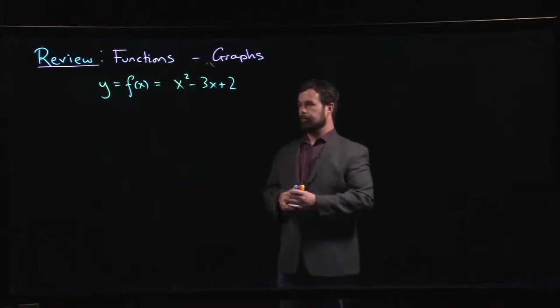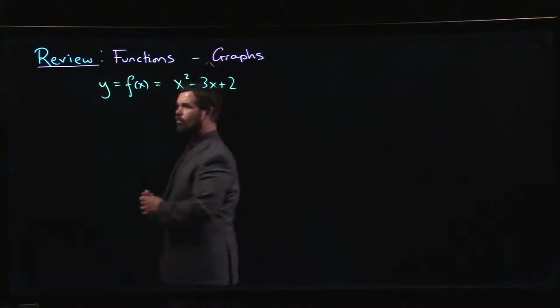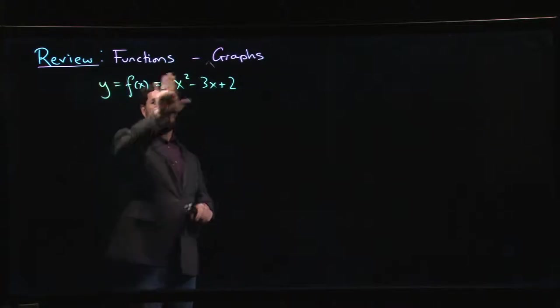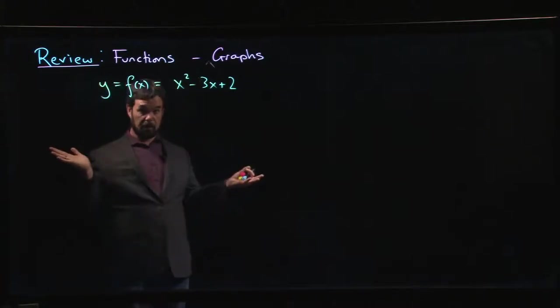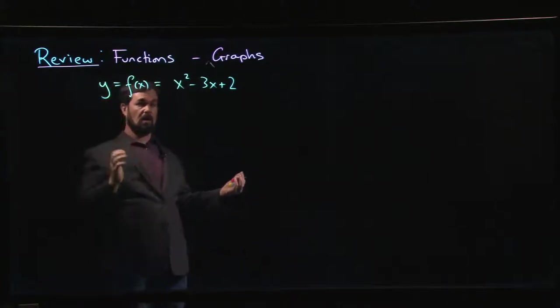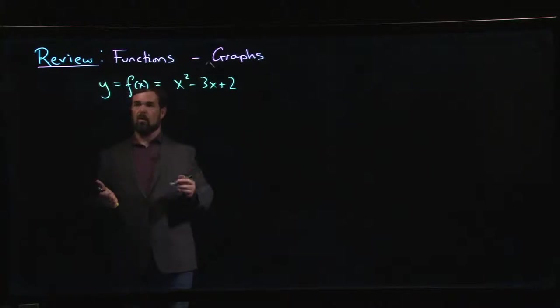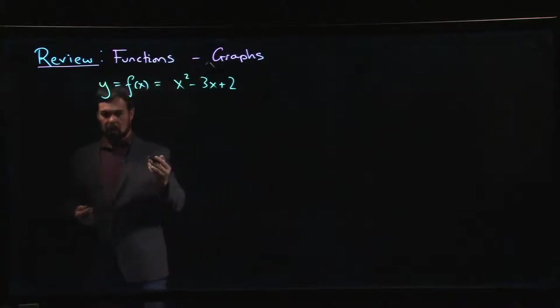Somehow, as soon as you put this y in there, there's this understanding that if you just have f of x, we're talking about a function. But if instead of putting f of x I put y, now it's a graph. Why do we have this context? Why as soon as there's a y in there are we talking about graphs?